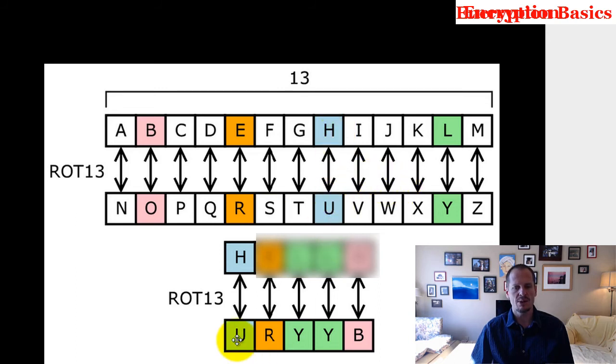And so if I wrote down U, when I unencrypt that, it becomes H. If I wrote down R, when I rotate back 13, it becomes E. If I wrote down Y, when I rotate back 13, it becomes L. When I wrote down B, when I rotate back or forward, it becomes O.